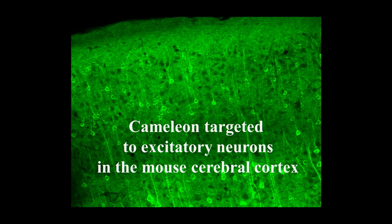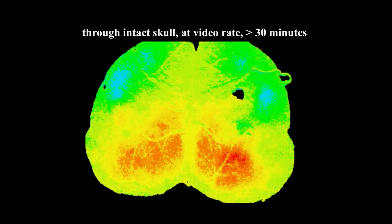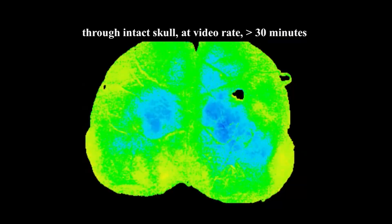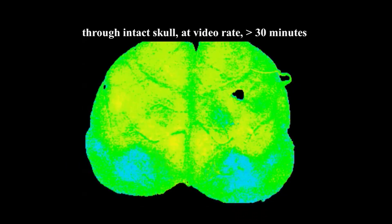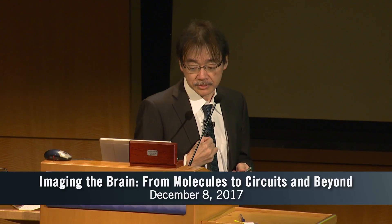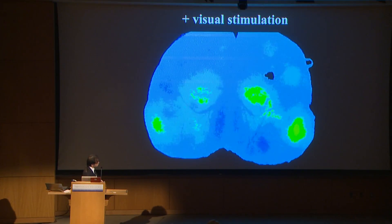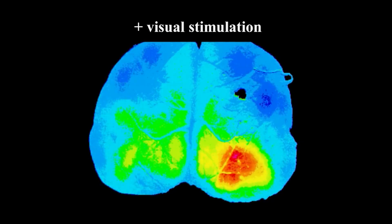We expressed a large quantity of chameleon in excitatory neurons of the mouse forebrain, and we shone the skinless head with excitation light to get a calcium readout through the intact skull for more than 30 minutes. These readouts reflect spontaneous neuronal activities composed of multiple oscillations of different frequencies and very symmetrical. When the mouse was half-awake and we gave visual stimulation, we saw an evoked response in the visual cortex.